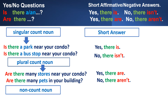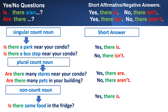With non-count nouns we say: Is there some food in the fridge? Yes, there is. No, there isn't. So for yes-no questions, we say is there or are there.